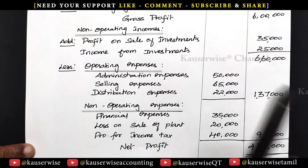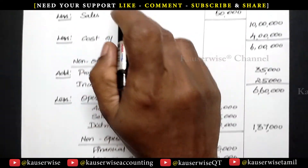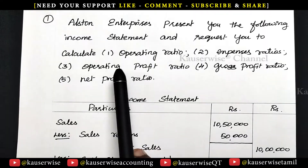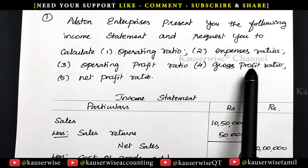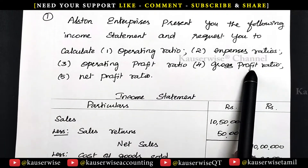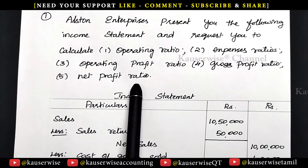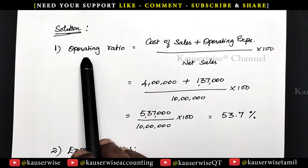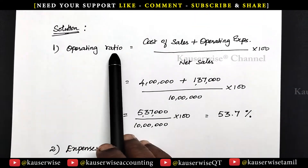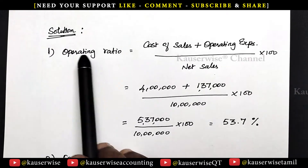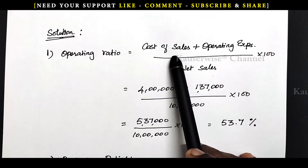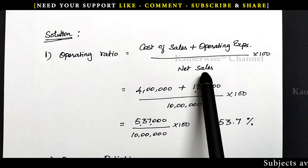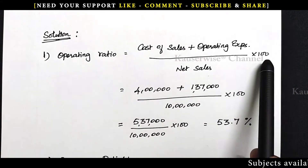With this income statement, they are asking us to find out operating ratio, expenses ratio, operating profit ratio, gross profit ratio and net profit ratio. The first one is operating ratio. The formula for operating ratio is cost of sales plus operating expense divided by net sales into 100.